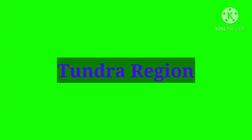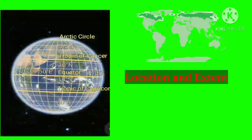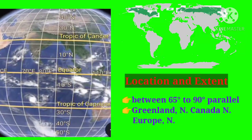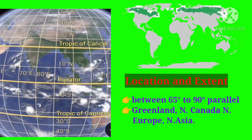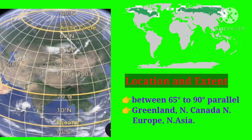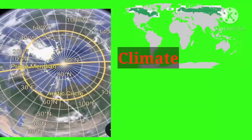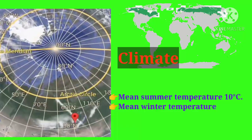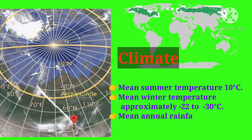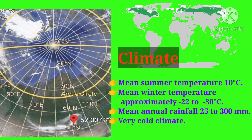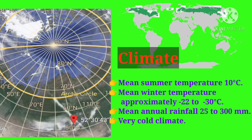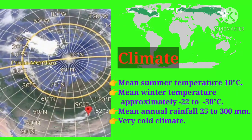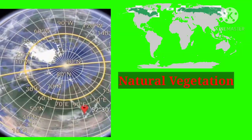The first region is the tundra region. Its location and extent is between 65° to 90° parallels, extended in Greenland, northern Canada, northern Europe, and northern Asia. The climate of the tundra region: mean summer temperature is 10°C, mean winter temperature is approximately −20°C to −30°C, mean annual rainfall is 25 to 300 mm, and the climate is very cold.